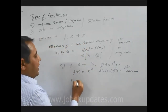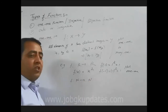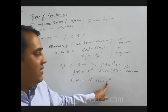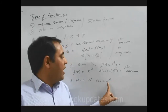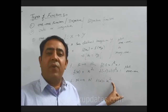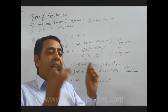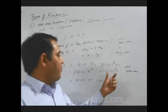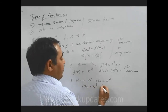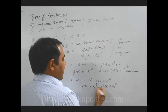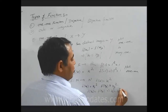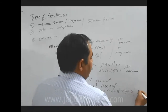Let us take another example: a function f is defined from natural numbers to natural numbers, and f(x) = x². This time if we put any natural number — put 1, we get 1² = 1; put 2, we get 2² = 4; put 3, we get 3² = 9; put 4, we get 4² = 16; put 5, we get 5² = 25. Whenever we put distinct elements, we get distinct images. Therefore, this function is a one-one function. We verify: f(x1) = x1² and f(x2) = x2², then f(x1) = f(x2) implies x1² = x2², which implies x1 = x2. Therefore, it is a one-one function.